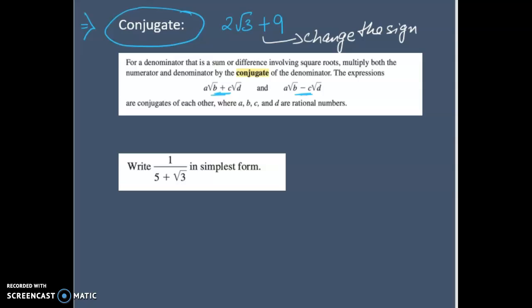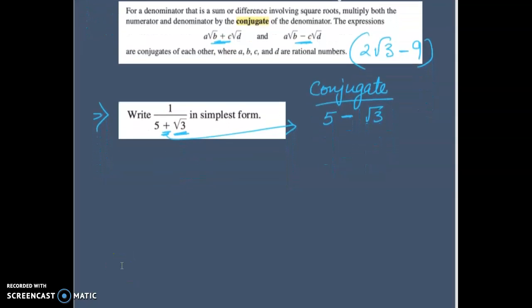And if I have to make a conjugate of it, the only thing that I have to do is change the sign. Change the sign. If I change the sign, what will happen? I will get 2 radical 3 minus 9. That is my conjugate. And now what I have to do with the conjugate? Conjugate will help us to eliminate a radical from the denominator. Let's try one example to understand it. We have this question right here. You can see we have a radical here, radical 3, and there is another operation. Addition is there. So first I will write the conjugate of it.